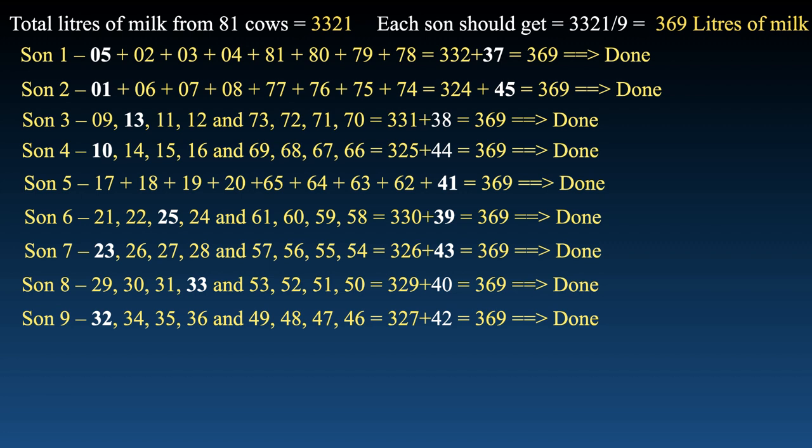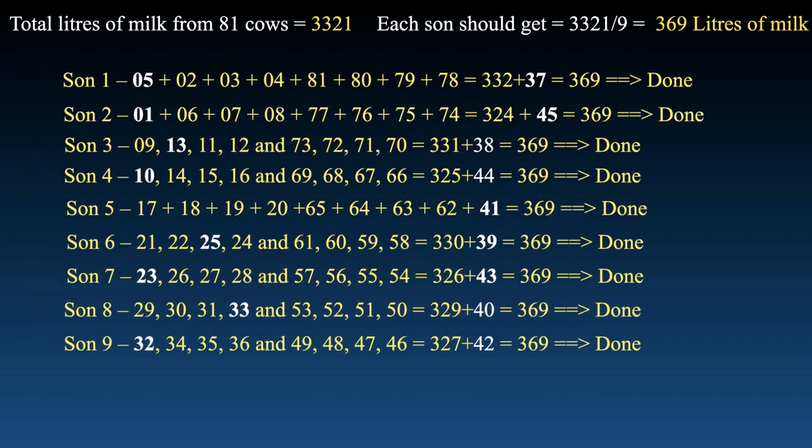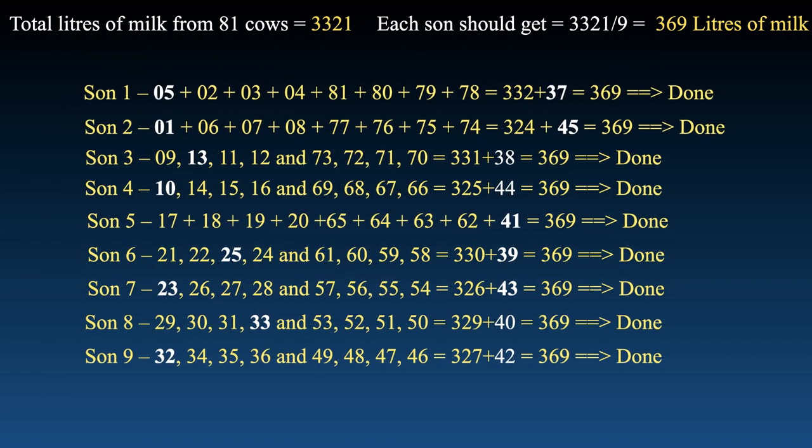Now all nine sons have nine cows each, and the total liters of milk each son gets is 369 liters. As you can see, in this method alone there are many combinations possible — share your combinations in the comment section. That's all for this video. Let me know if you have any questions and I'll try to address them as soon as possible. Thanks for watching and thank you for your support.